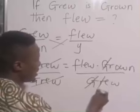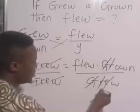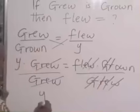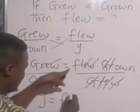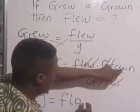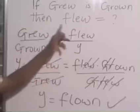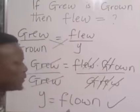Here, G will cancel G, R will cancel R, E will cancel E, W will cancel W. So, y is F, L, O, W, and N. Therefore, the past participle of flew is flown. That's good.